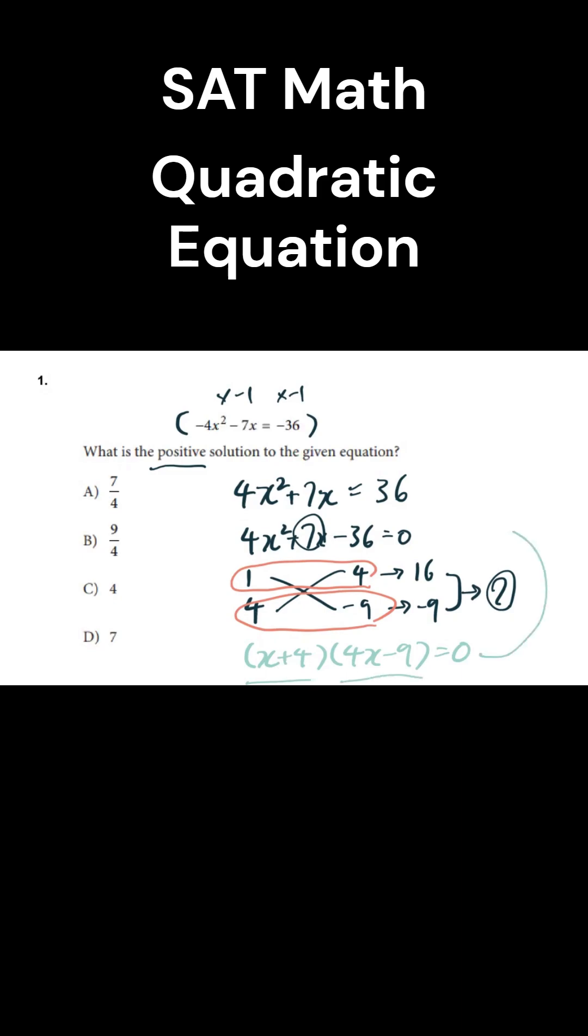So the solutions to this equation can be negative four or nine over four. But it's asking for the positive solution, we should go for the nine over four, meaning B is our answer.